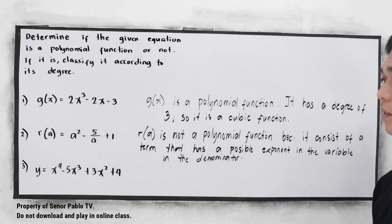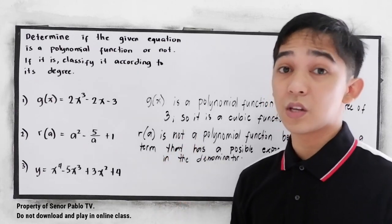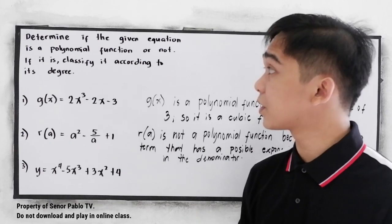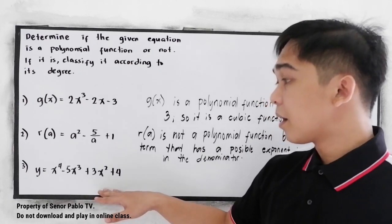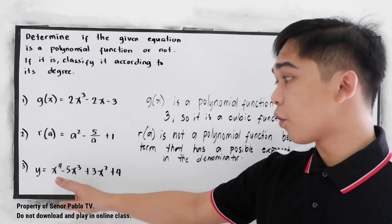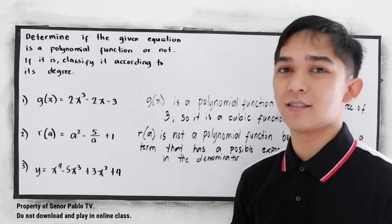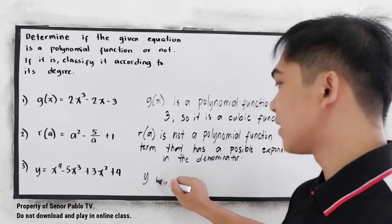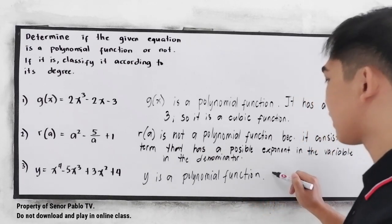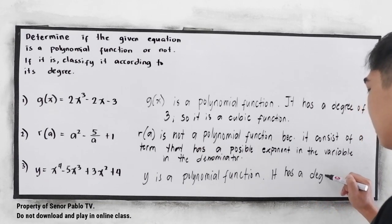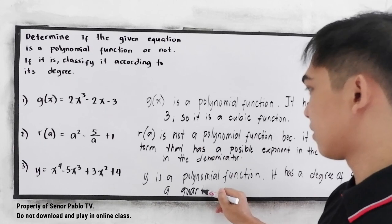In number 2, check the restrictions of our polynomial function — that is covered in your first quarter lesson. If you want to learn the restrictions of polynomials, go to the first quarter playlist of grade 10. Number 3: y = x⁴ - 5x³ + 3x² + 4. Is y a polynomial or not? Yes, y is a polynomial function. It has a degree of 4, therefore it is a quartic function.